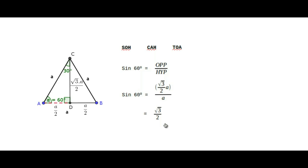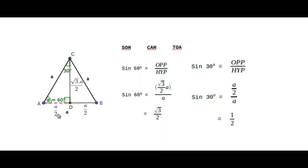It is a fixed value. Let us see what is the ratio of sine 30 degree in the same triangle ACD. The sine ratio is opposite over hypotenuse. Here the opposite is AD and the hypotenuse is AC. The value of opposite is A/2, and the hypotenuse is A. Here also A and A cancel, and the value is 1/2, which is fixed for sine 30 degree.